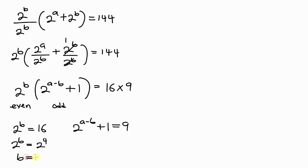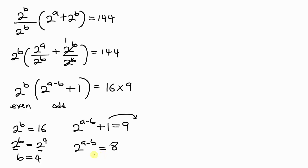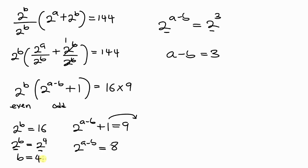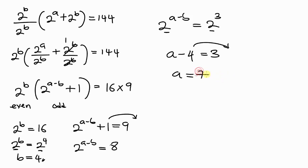Since the bases are the same, the powers must be equal, so b = 4. Moving 1 to the right-hand side: 2^(a−b) = 8 = 2^3. So a − b = 3. Substituting b = 4: a = 3 + 4 = 7.